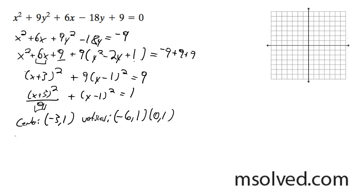And then my foci are going to be, it's going to be square root of 9 minus 1, which is equal to 2 root 2. So it's going to be negative 3 minus 2 root 2, 1, and then negative 3 plus 2 root 2, 1.